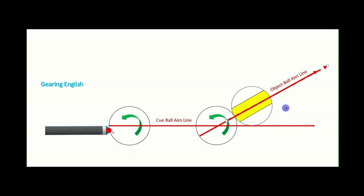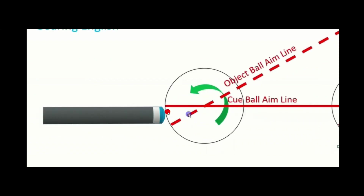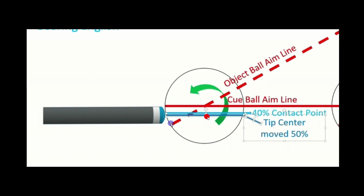To calculate for gearing English, you take the line that the ball is intended to go on and bring it over to the cue ball, which creates two points. You want to contact the cue ball 40% of the distance between these two points. Visibly, you're probably looking at about 50% of the distance between those two spots to achieve the 40% contact point — that will give you gearing English.